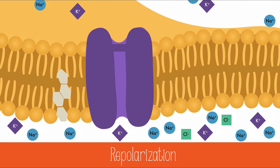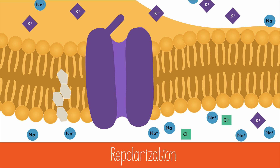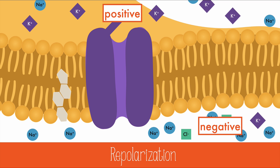Nearby is the voltage-gated potassium channel, which will now open and allow potassium ions to flow out of the cell. The movement of these positive ions will repolarize the cell, allowing the cell to have a negative internal charge relative to the positive extracellular charge. The change in polarity will also close the potassium gate.